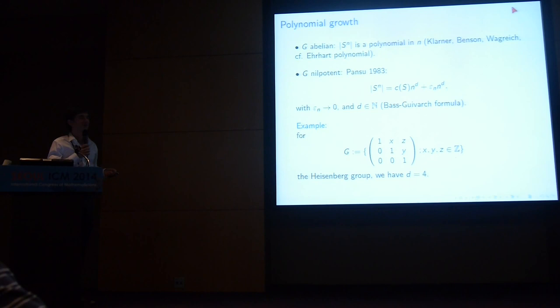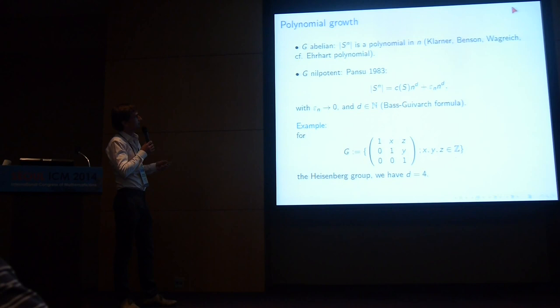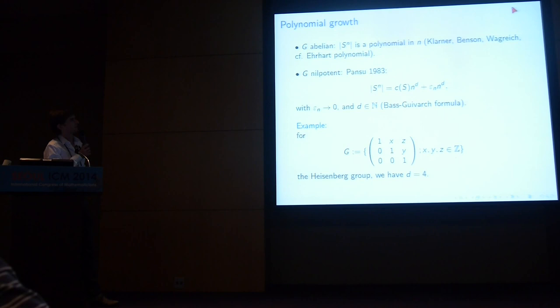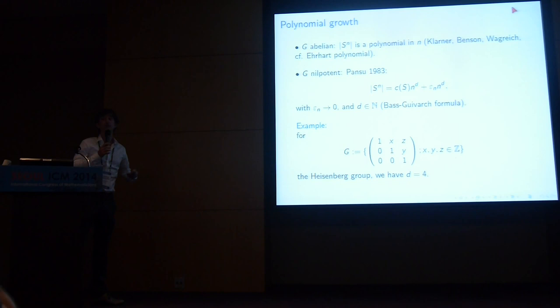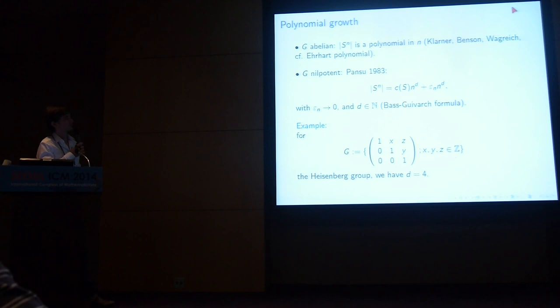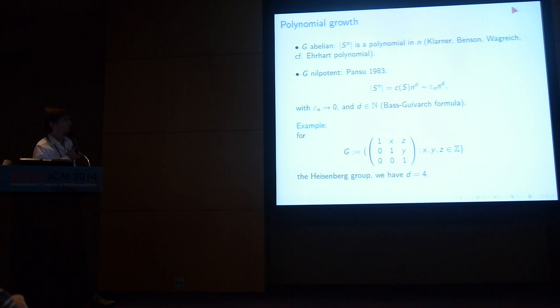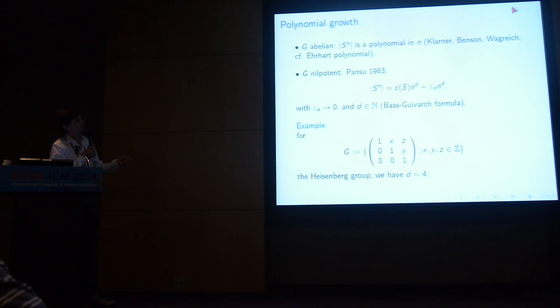What about the nilpotent case? A group is nilpotent if it is non-abelian but close to abelian, having a non-trivial center; dividing by the center again yields a non-trivial center, and so on, terminating in finitely many steps. Equivalently, nilpotent groups are subgroups of upper triangular matrices with ones on the diagonal — the Heisenberg group is the famous example. In this case, growth is polynomial: it is constant times n to the d plus lower-order terms. The fact that the leading constant exists is a theorem of Pansu from 1983.